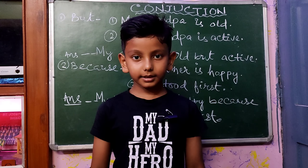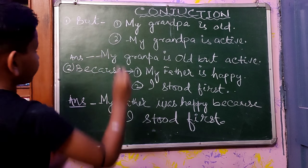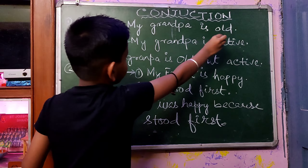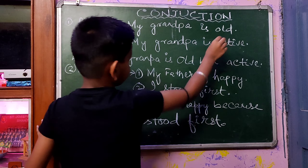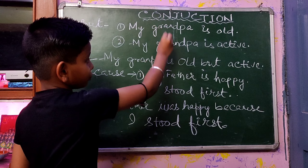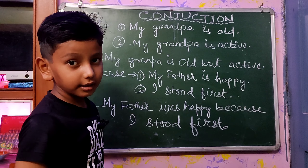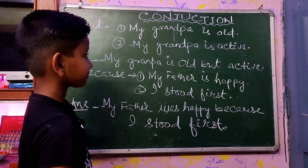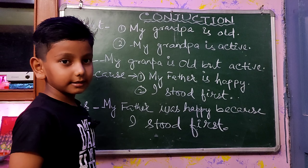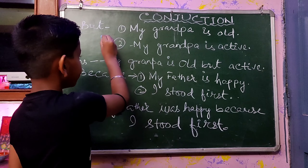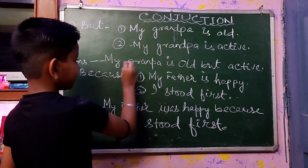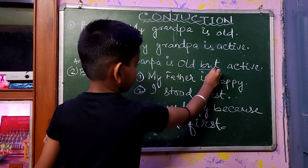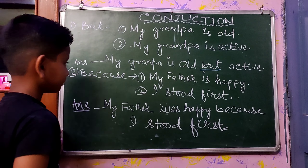Now friends, BUT: 'My grandpa is old. My grandpa is active.' So friends, to join these two sentences, we use the conjunction word BUT. And the sentence that comes after joining BUT is: 'My grandpa is old but active.'